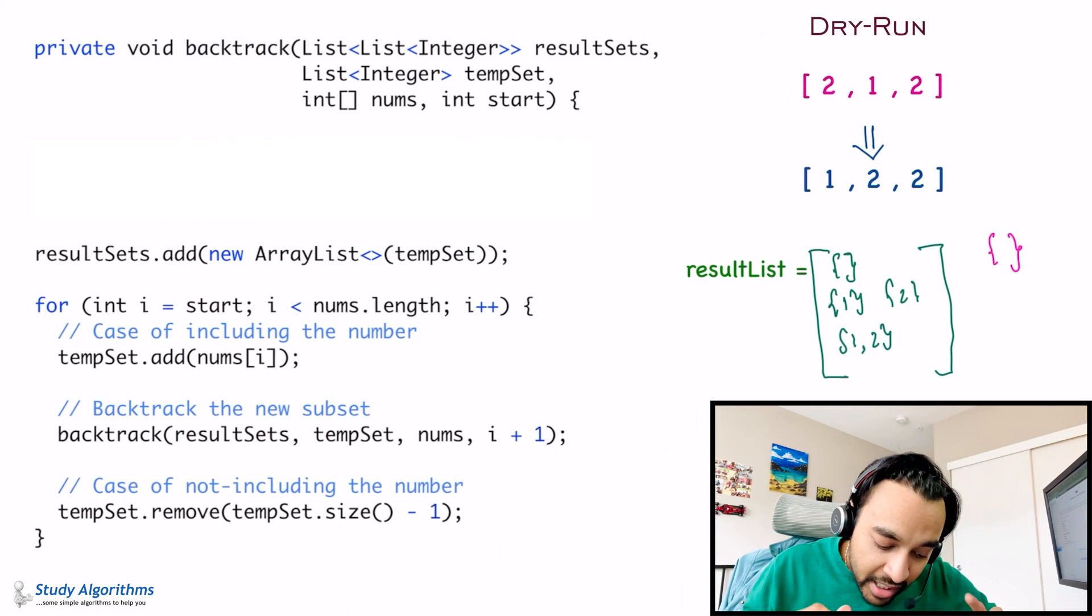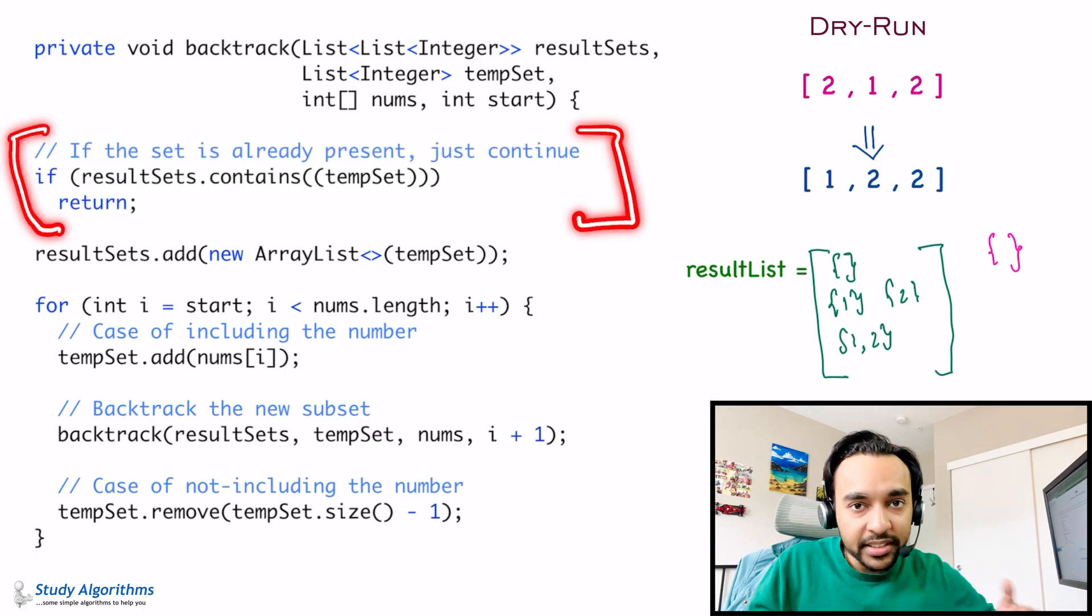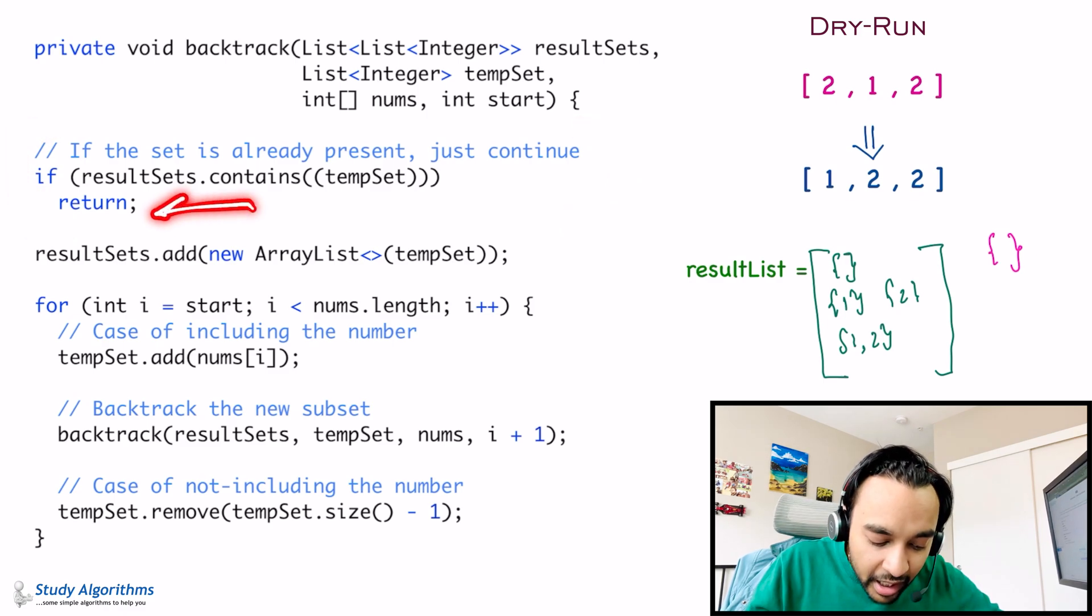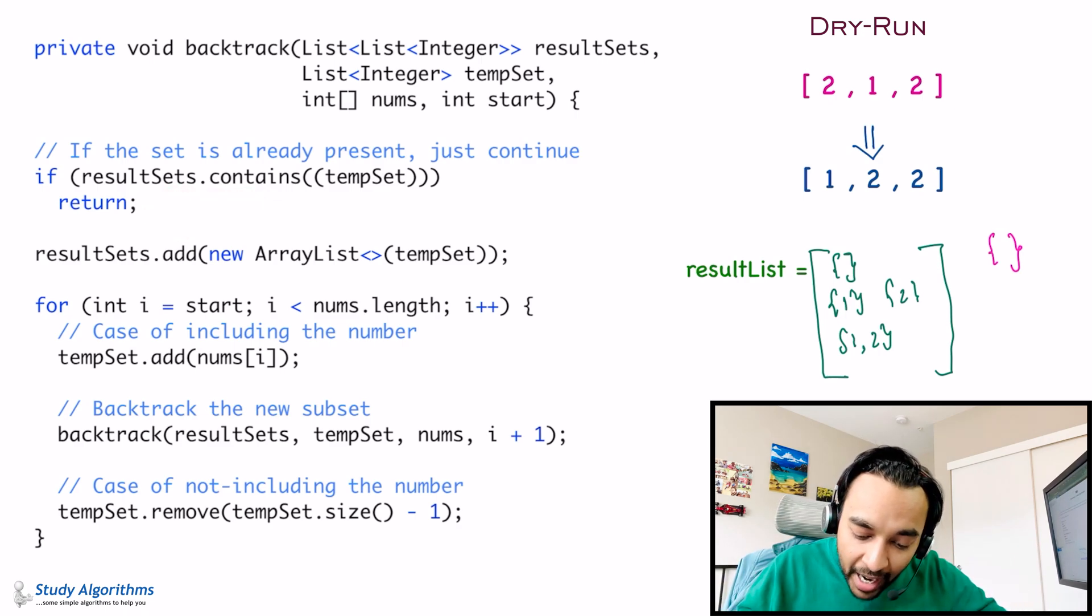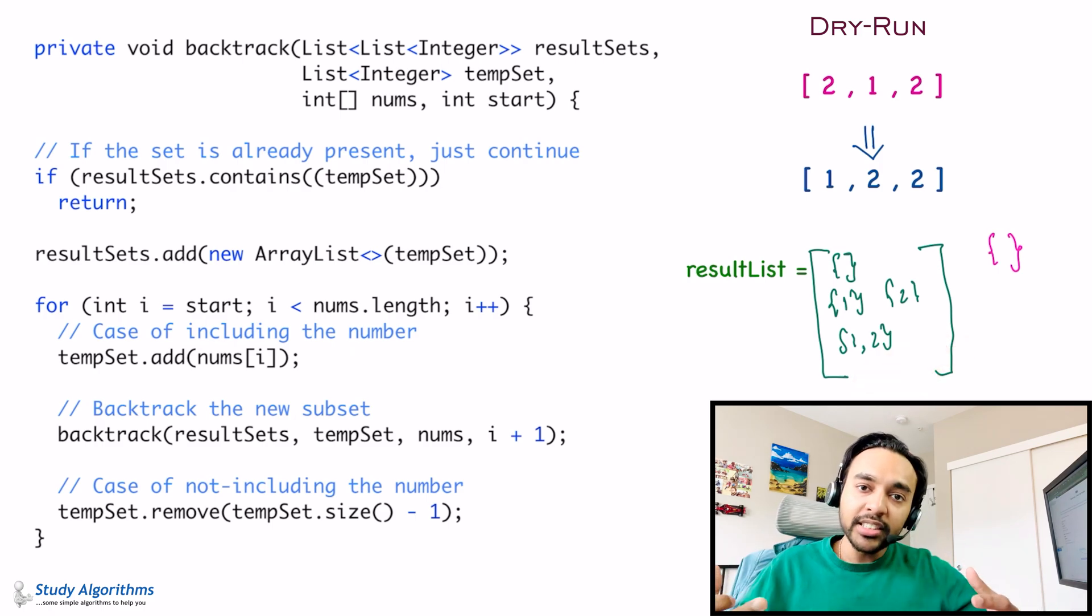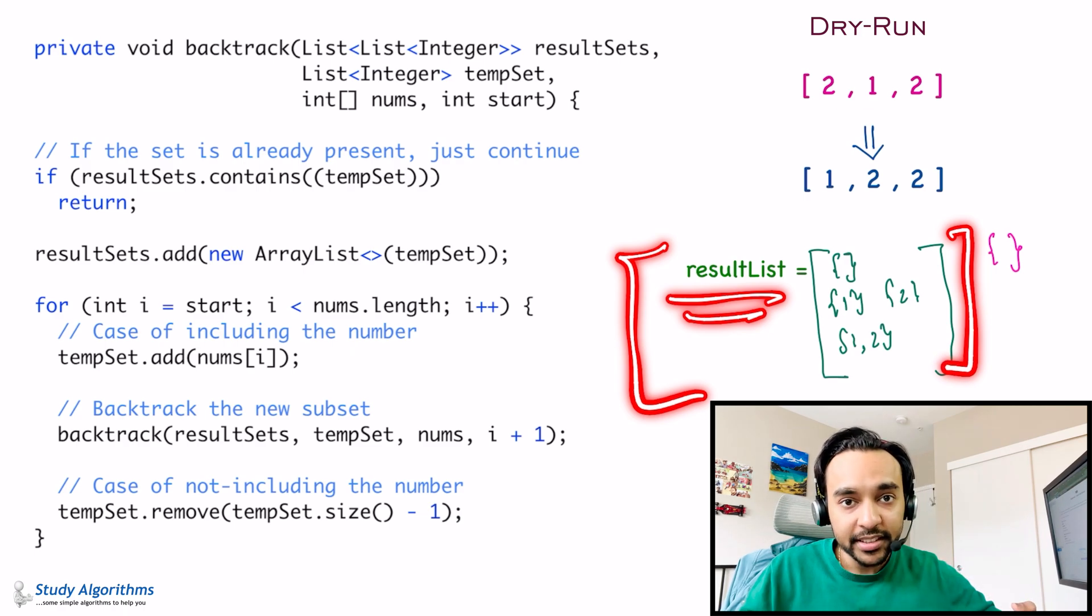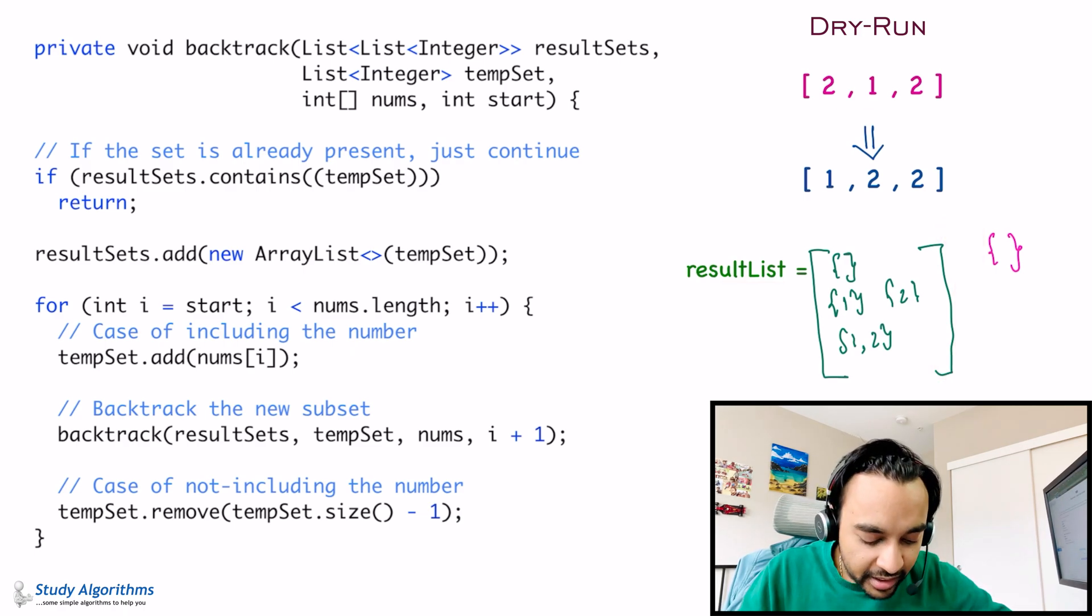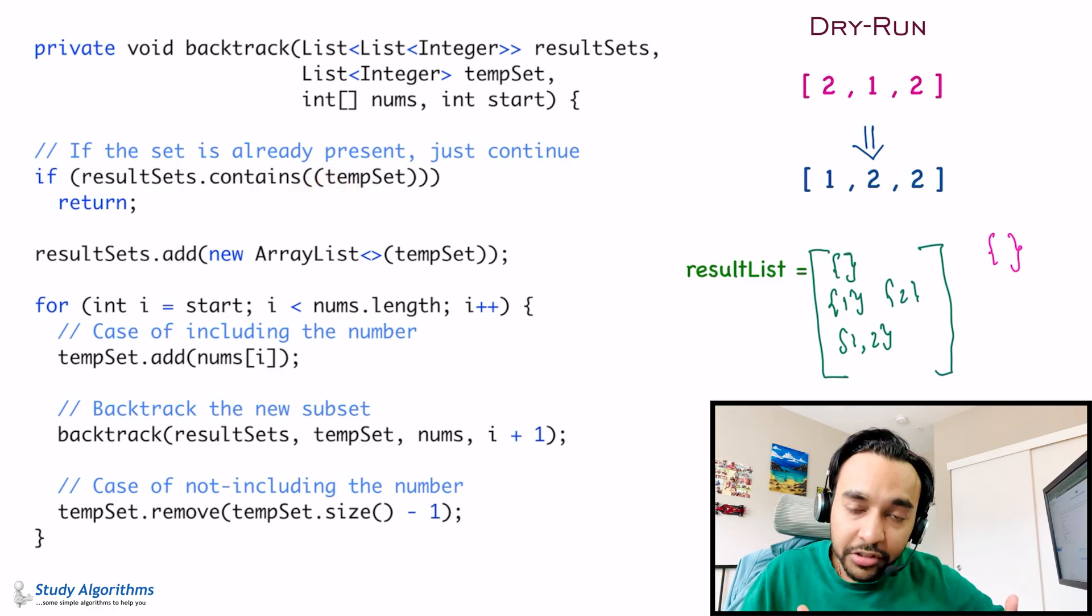So, that means, we can just add a simple condition to our code. And that condition would be, if the set is already present in my result set, I do not want to add it again. And what I'm gonna do is, I will just return. So, this will not add a duplicate set to my result list. And that's it. When this method will end, your result list will have all of the unique subsets. And since we are not doing anything different, we are just adding an if condition. Right? So, the time complexity and the space complexity of this solution is also the same as the original problem.